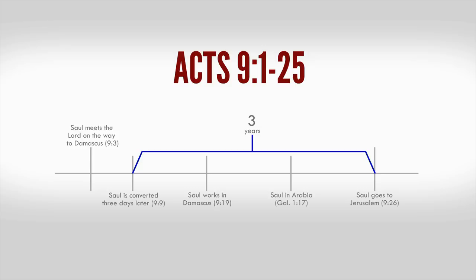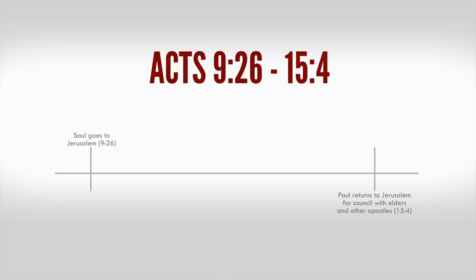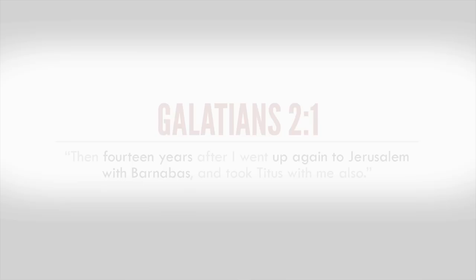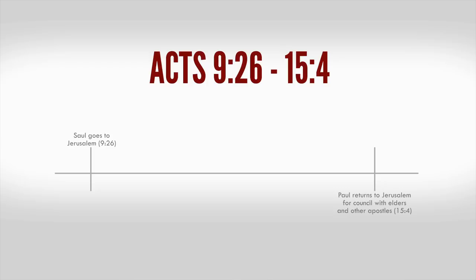The third block of time is going to be Acts 9:26 through Acts 15:4. This span of time is also identified by Paul. It covers from Paul meeting with the apostles in Jerusalem for the first time to his return to Jerusalem with Barnabas for the discussion of matters of salvation with the other apostles and elders, Acts 15:1 and 15:4. Paul describes this period by noting, 'Then 14 years after I went up again to Jerusalem with Barnabas and took Titus with me also,' Galatians 2:1. In short, the period between his first trip and next trip to Jerusalem with Barnabas was 14 years.